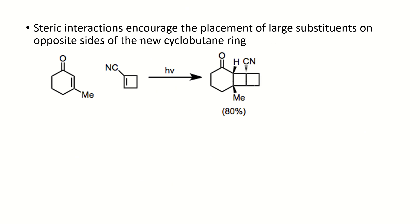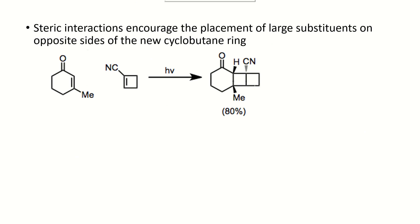Here is another example. In order to attain stability due to steric interaction between bulky groups like a methyl group and a cyano group, the mechanism encourages formation of a final product in which both of these substituents are in opposite directions. That will be the major product when steric interaction governs.